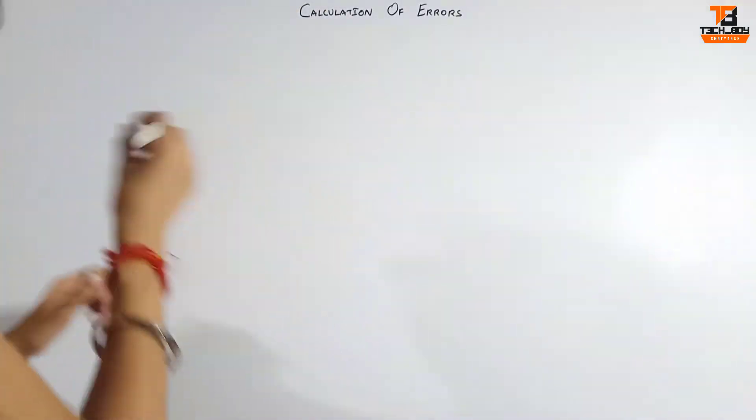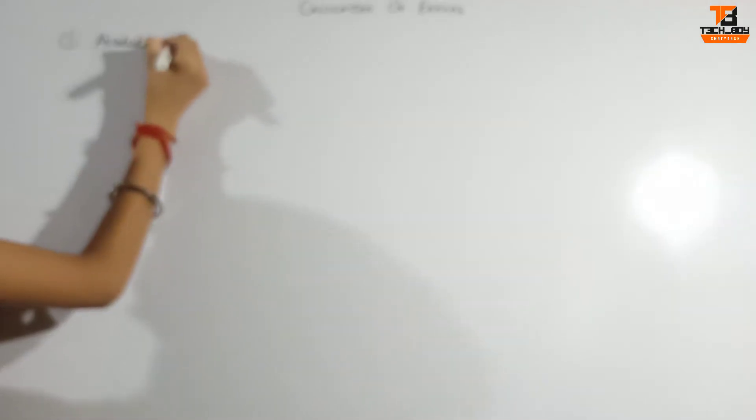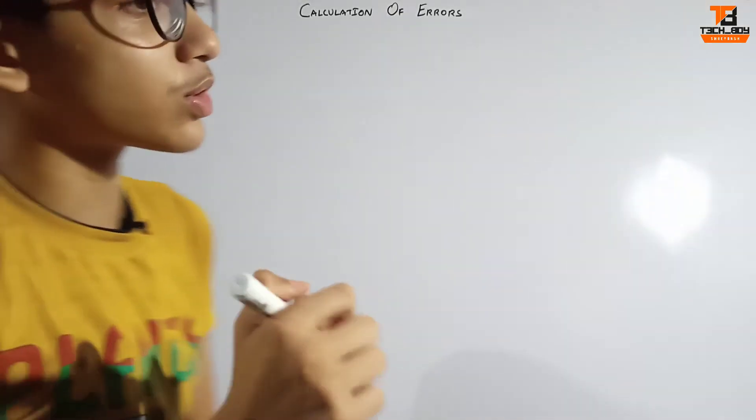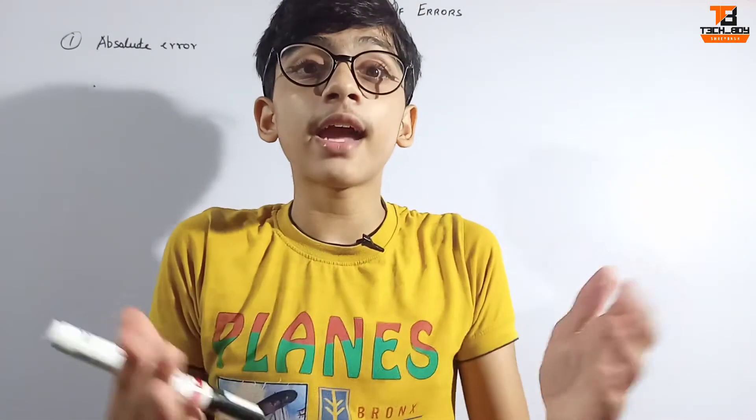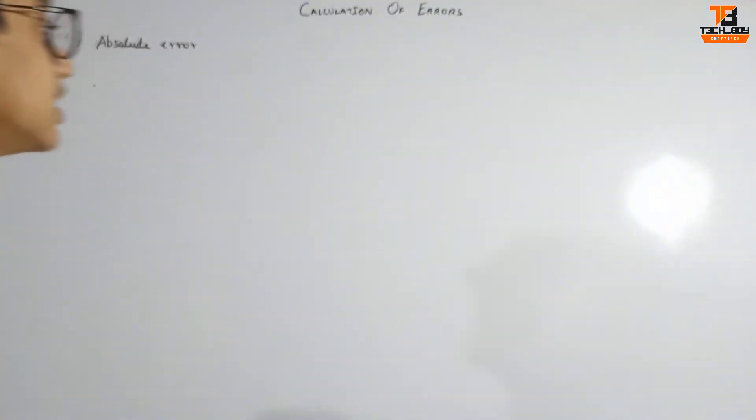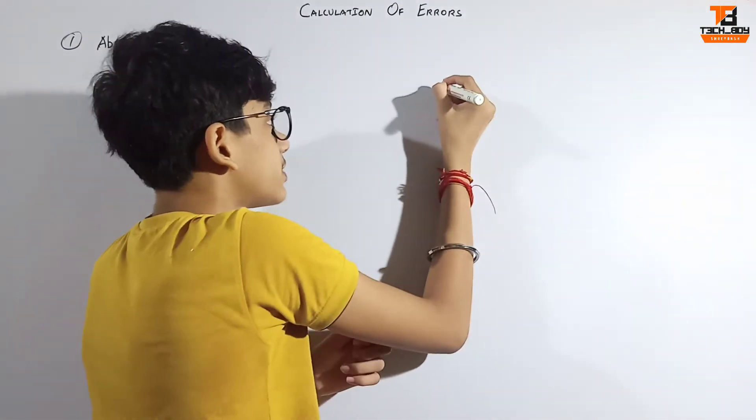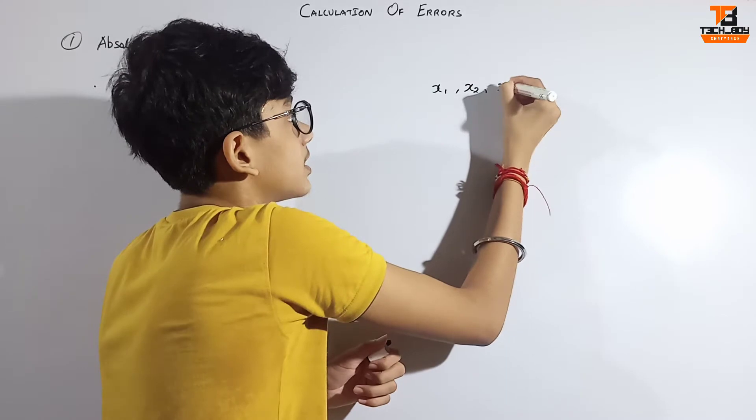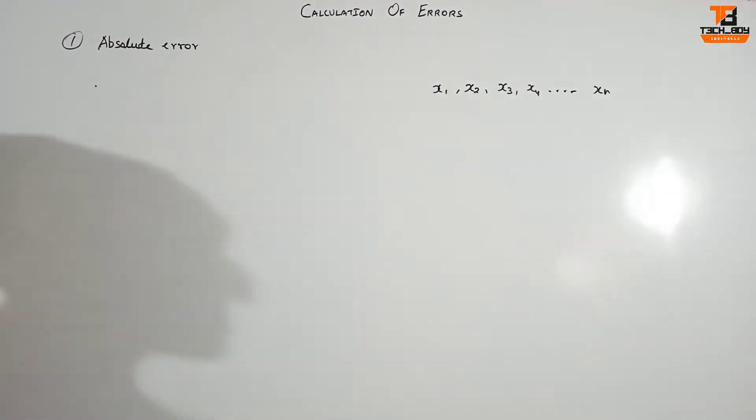The first thing we're going to talk about in today's video is absolute error. The first point is that it can be positive and negative both. So now you will think how is it possible, positive and negative both. So let's first, we have to remove true value. We have to remove true value x1, x2, x3, x4 dot dot dot xn to get observations.